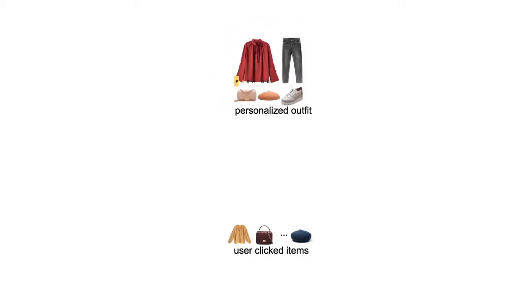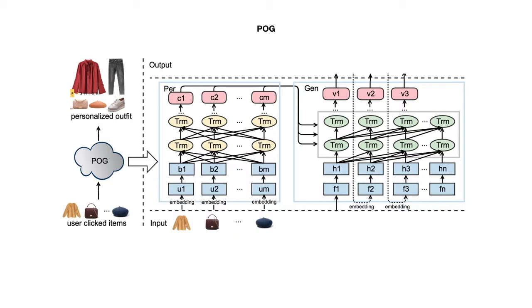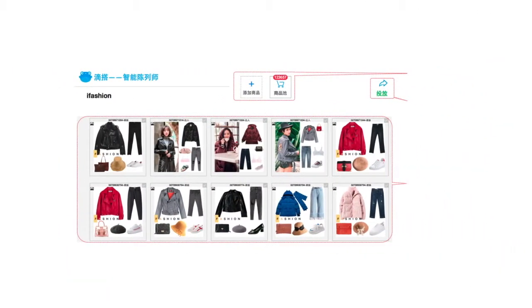Now we consider a generation model which generates personalized and compatible outfits by introducing user preference signals. To take advantage of the encoder-decoder structure, we aim to translate user historical behaviors to personalized outfits. We name the model Poam. The encoder takes user clicked items as the input. Given a special token start, the decoder then generates an outfit one item at a time.